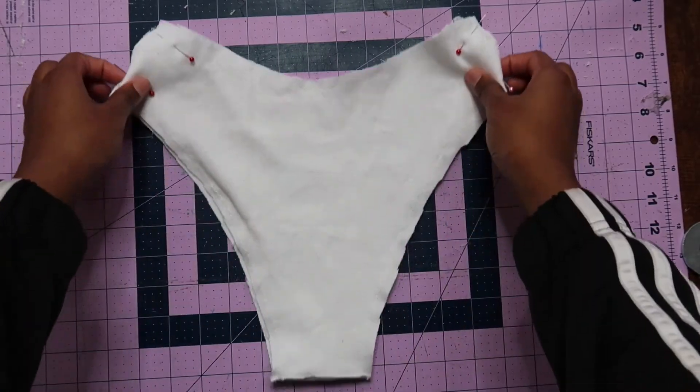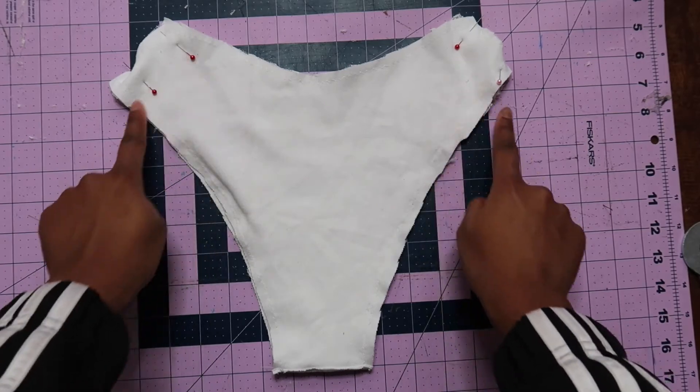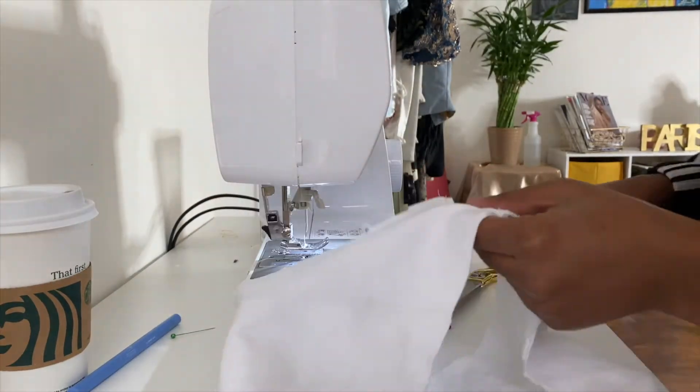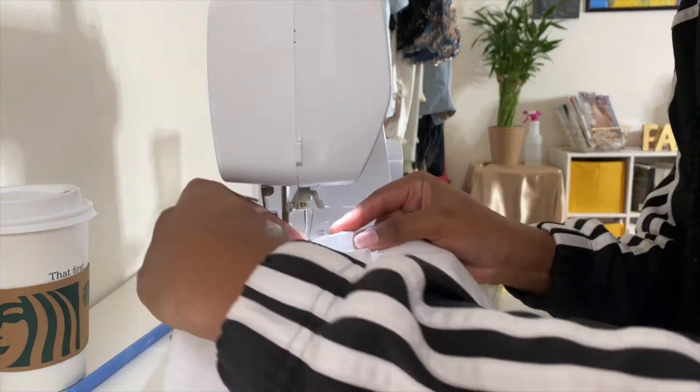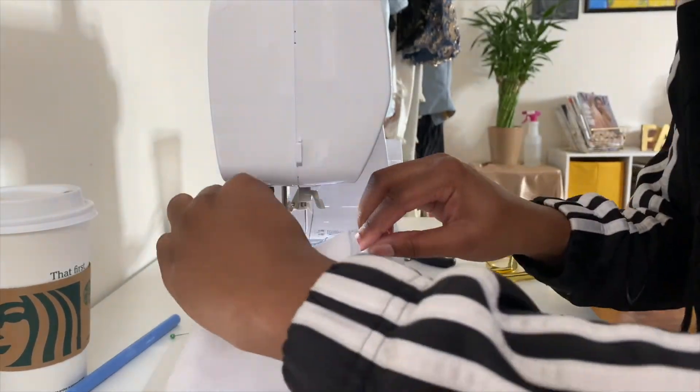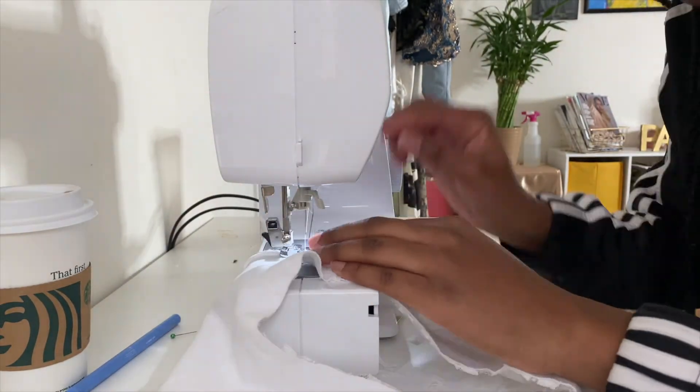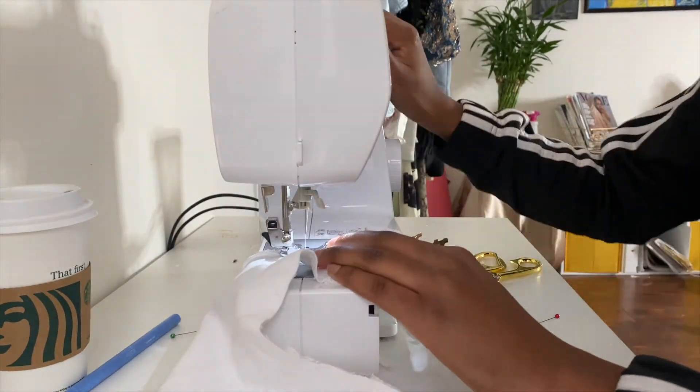For the panties, we're also going to turn them right sides together and stitch that down with the zigzag stitch. Once that's done, I'm going to fold over once. You can fold over twice—it depends on how thin you want that area to be. I'm just going to fold over once and do a zigzag stitch down.